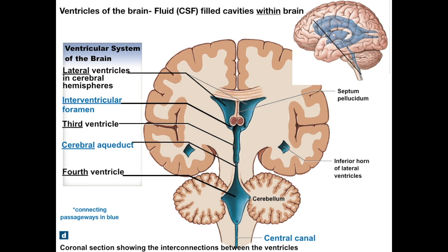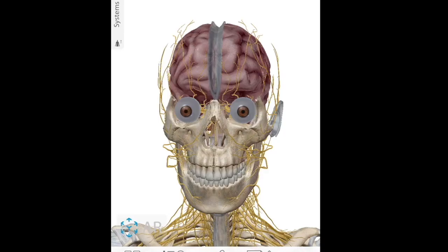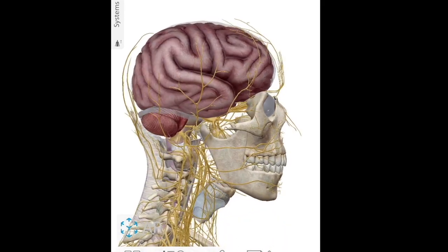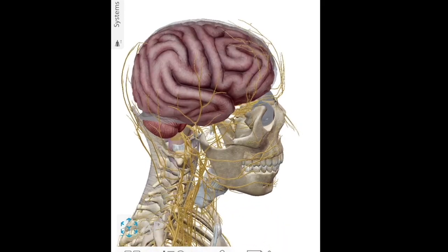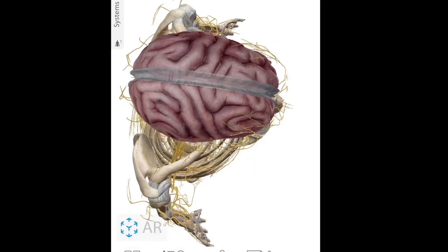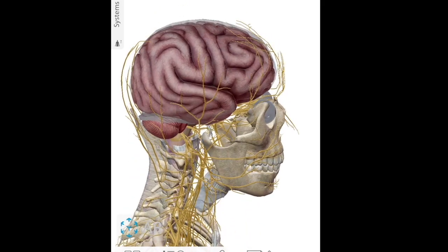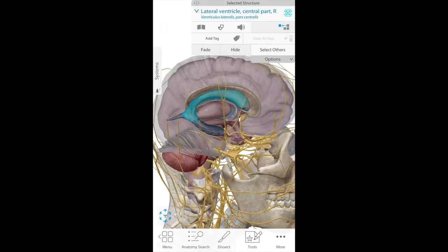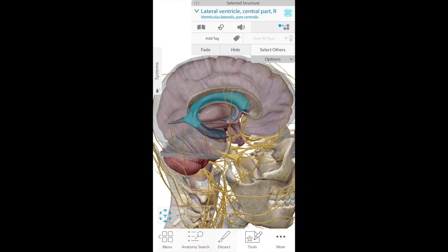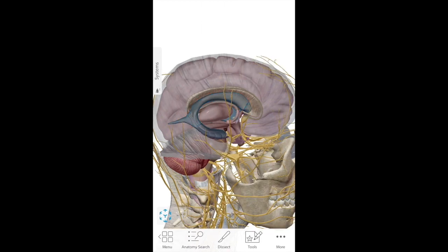If you take cross sections at a different plane or slightly different angle, you'd get a very different look, so it really helps to look at some 3D images. Using the Visible Body app, we're going to remove different sections of the brain to get a better look at the ventricles. First, let's dissect out the right cerebrum and highlight the lateral ventricle, then remove the other side of the cerebrum to look at the structures closely associated with those ventricles.